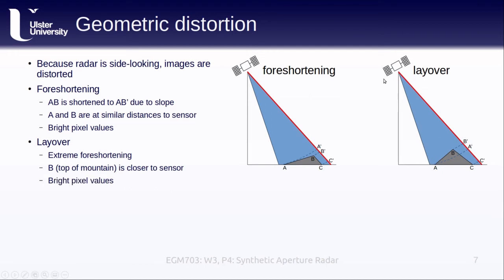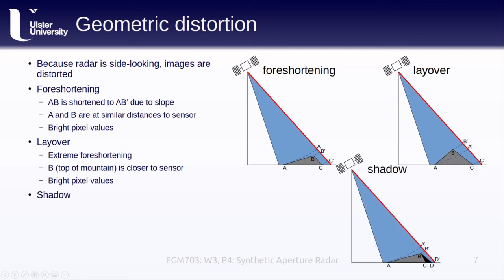Like with foreshortening, we see bright pixel values associated with layover, and for the same reason — the slope is a very good reflector back to the sensor. Finally, we have shadow, where the back slope is entirely hidden from the sensor by the top of the mountain. With this type of distortion, we have dark pixel values because nothing actually returns to the sensor from the slope BC, between points C and D.